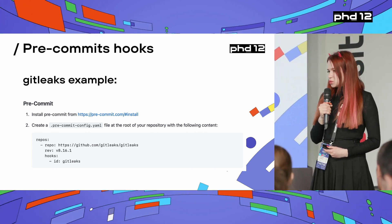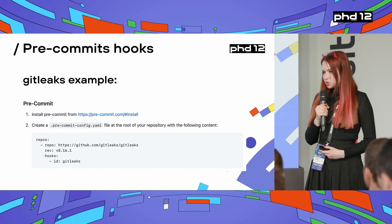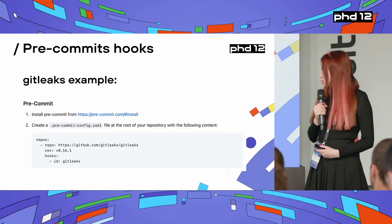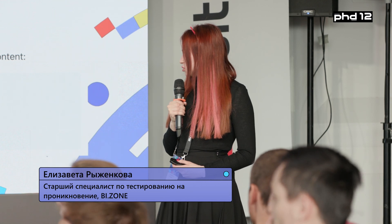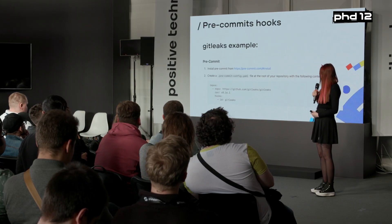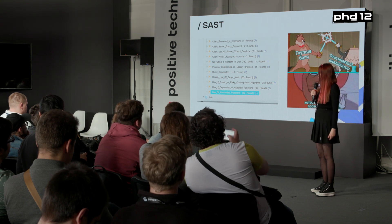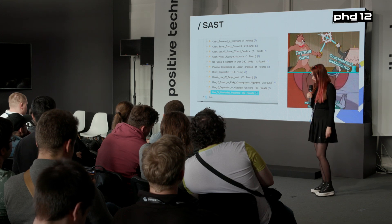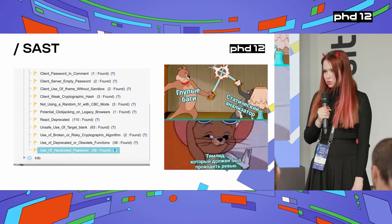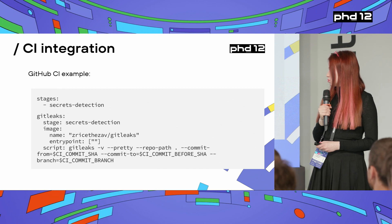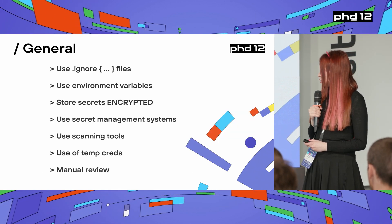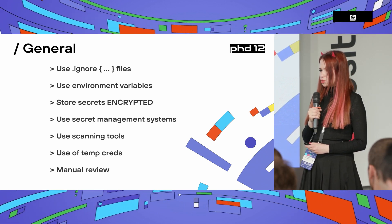So what are the ways to prevent it? The best way is to use pre-commit hooks, which means you have a verification stage before data is sent to a remote server. When you commit, the commit is checked for secret information. Here we can see an example where Gitleaks tools were implemented and analyzed whether the code contains any secret information. You can also use SAST solutions, which improve code quality and help with other vulnerabilities. You can also integrate these tools into CI — here we can see an example for GitHub CI.